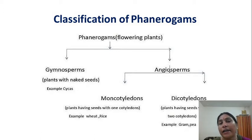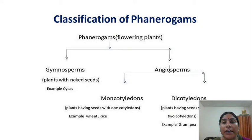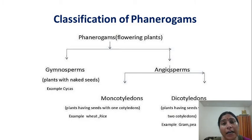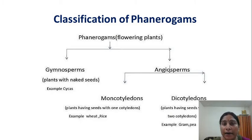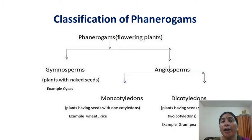Angiosperms are divided into two classes: Monocotyledon and Dicotyledon. In Monocotyledons, the seed has only one single cotyledon — also called Monocot. Examples are wheat and rice. In Dicotyledons, the seeds have two cotyledons — also called Dicot. Examples are gram and pea.